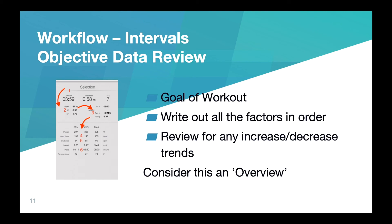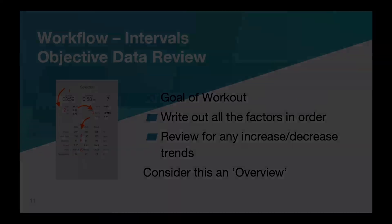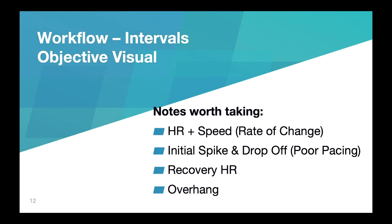Here is the objective data review — this is where I pull everything from, as you can see from the numbered sections. The next piece is looking at the actual intervals: objective visual data. A couple of notes worth taking: we're going to talk about heart rate and speed — what's the rate of change? Are we seeing a rapid increase in heart rate that doesn't come with a rapid increase in speed? Any inverse relationships, an initial spike and drop-off, poor pacing, recovery heart rate? And we'll talk about something called overhang.